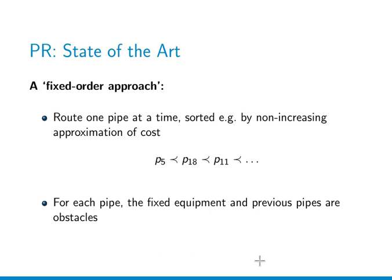That was for one single pipe. Now we have several pipes and we need to route them in a conflict-free way. The state-of-the-art for pipe routing was a so-called fixed order approach, in which we construct a list of pipes in a certain order — for example, by non-increasing cost approximations — and then route pipes sequentially. Each routed pipe becomes an obstacle for the remaining ones.